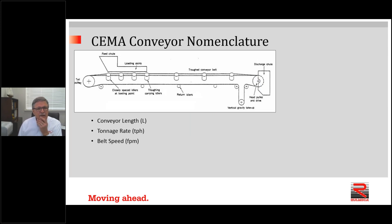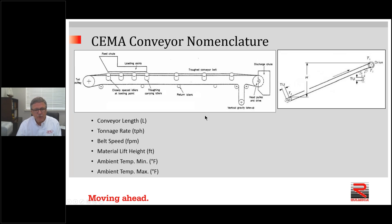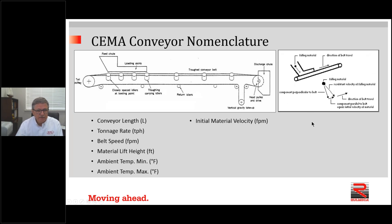Now to address CEMA conveyor nomenclature using the historical methods. First, we define conveyor length as the distance between the tail pulley and the head pulley. We also define tonnage rate — in this example, continuous flow of material from feed chute to discharge chute measured in tons per hour. Belt speed is specified in feet per minute. Material lift height is defined as the distance from the top of the tail pulley to the top of the head pulley. We also need to define minimum and maximum ambient temperature in degrees Fahrenheit, and initial velocity if relevant — though in most cases it's negligible and we leave it at zero.